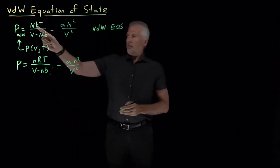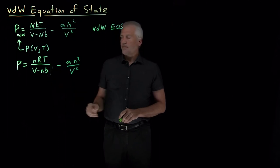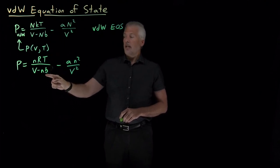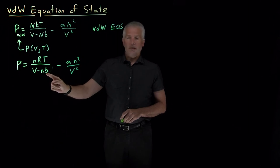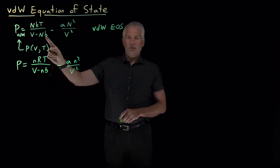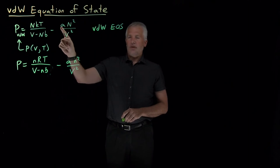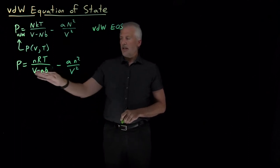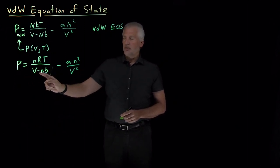Just like Boltzmann's constant turning into the gas constant — the same number expressed in different units, joules per Kelvin or joules per Kelvin per mole — the same applies here. I can think of the molecular volume as a number per molecule, or as a volume per mole. When I change from big N to little n, I need to think about molecular volume in terms of volume per mole. Likewise, the A constant will have extra units of per moles squared to reflect counting molecules in units of moles. Other than that, these are exactly the same expression.